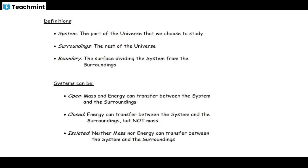For a simple system you can easily tell which is the system, surrounding, and boundary. But for complicated systems — like chemical reactions inside your body, enzymatic reactions in blood — you cannot simply distinguish which is system, which is surrounding, or where the boundary is. Differentiating these is not an easy task.